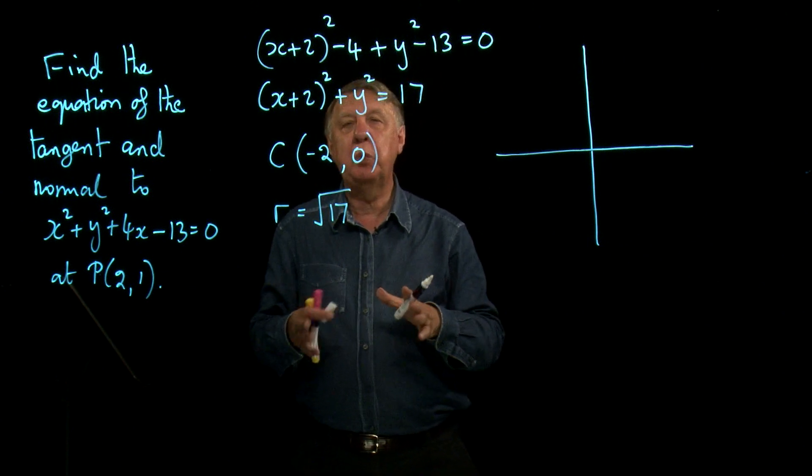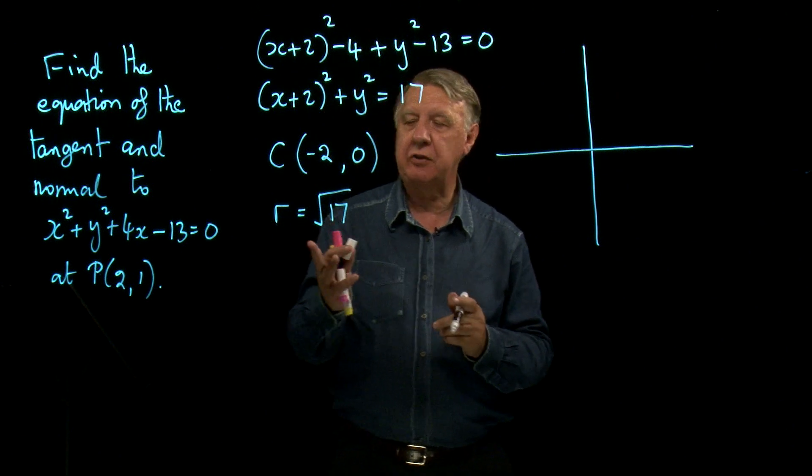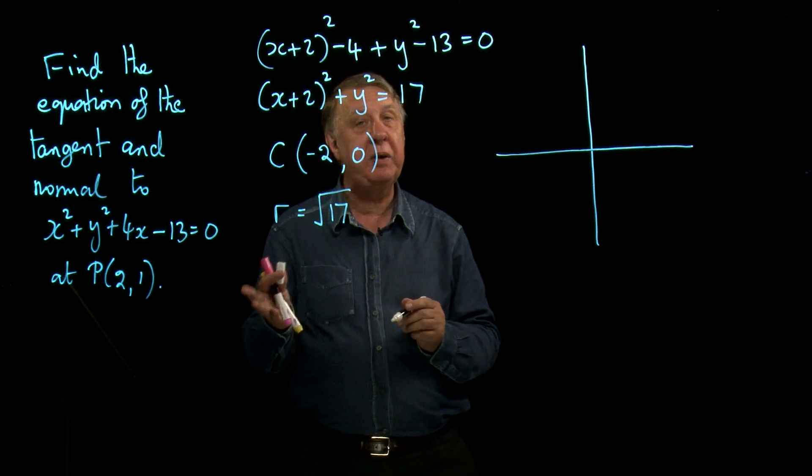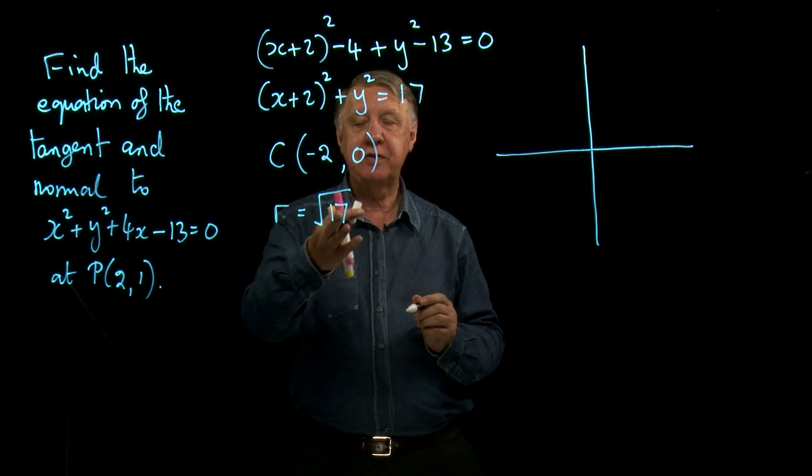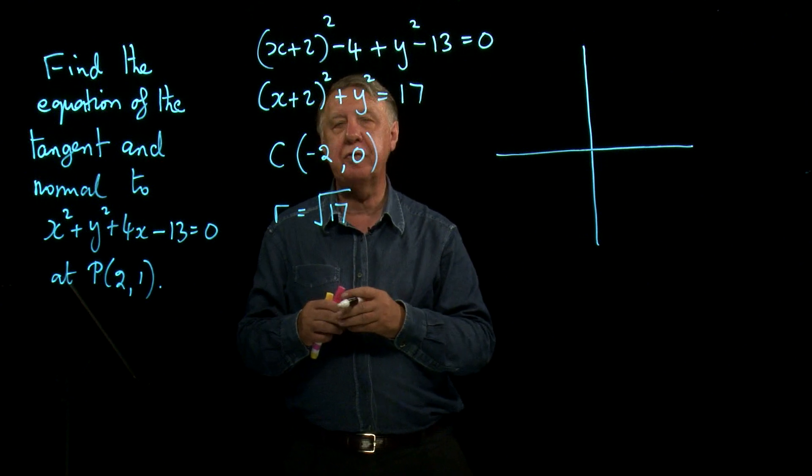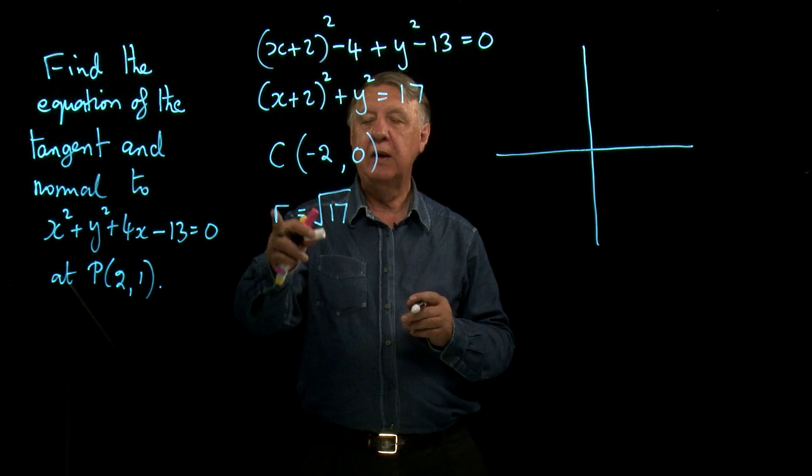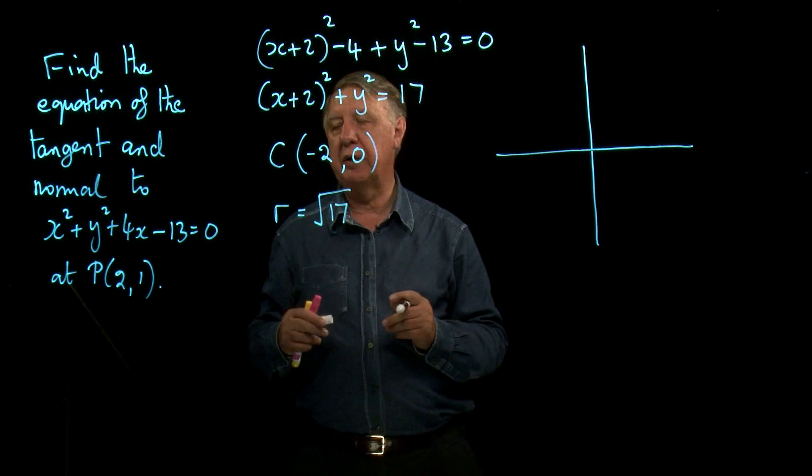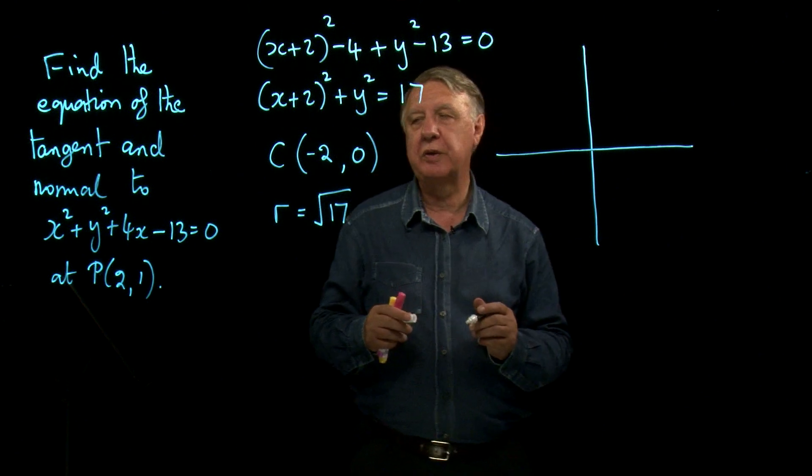We don't need to work it out, but it's actually important that you understand how big that number is. Now 17 is bigger than 16 and the square root of 16 is 4, so the crucial thing is that that's a bit bigger than 4. You'll see why when I try to draw the diagram.